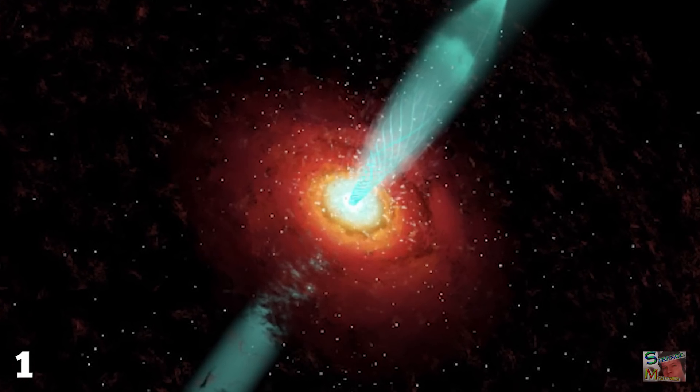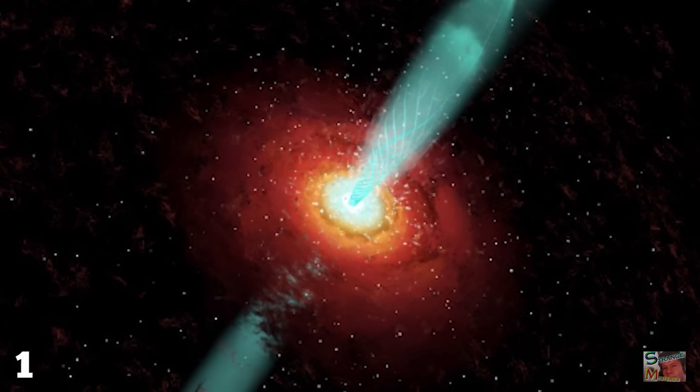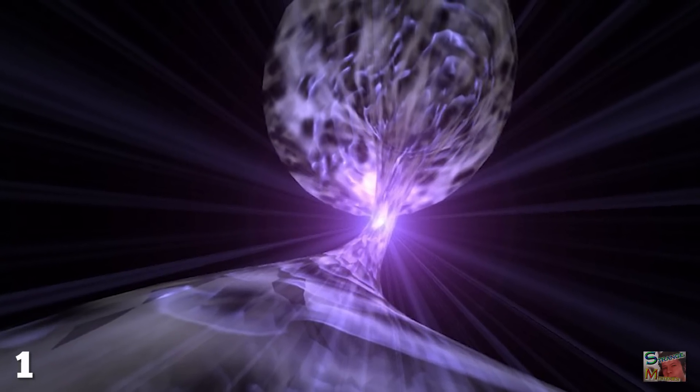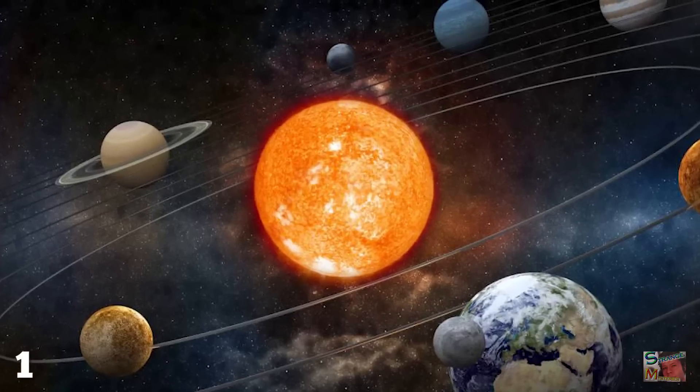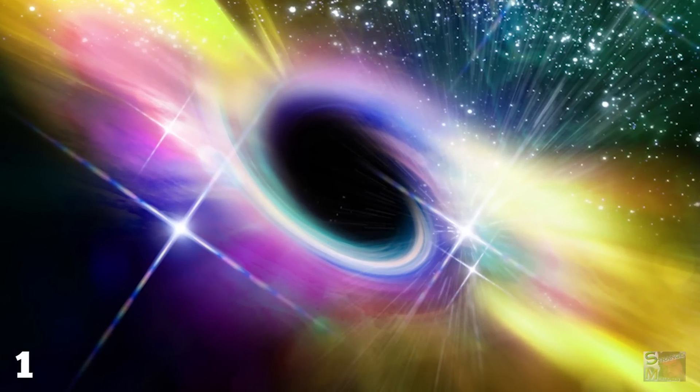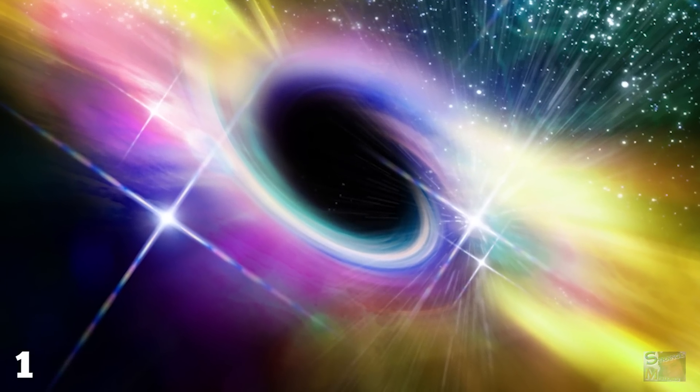The atom smasher would fire two particle beams in opposite directions through a series of relay stations, with each using powerful gravitational fields to bend the beams into an orbit around our solar system. The two streams would move in opposite directions, and after a few thousand laps of our solar system, they would get faster and faster until they collide, with the resulting explosion so powerful it fully tears reality a new one.